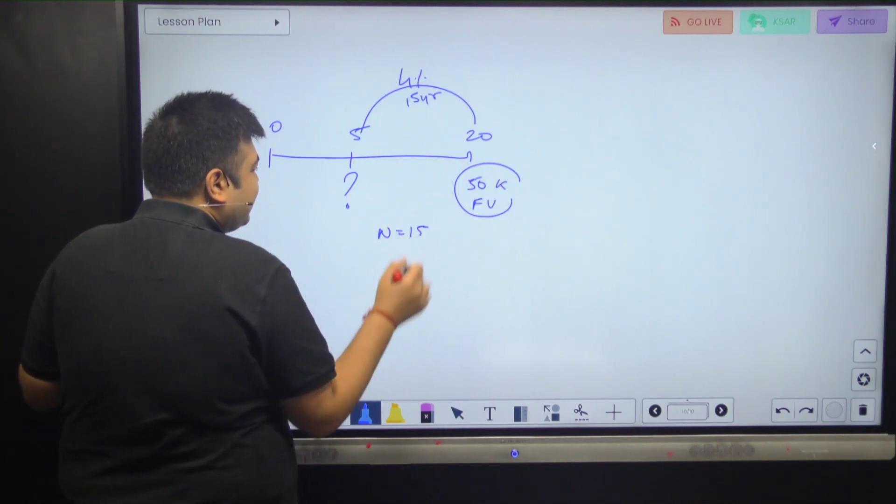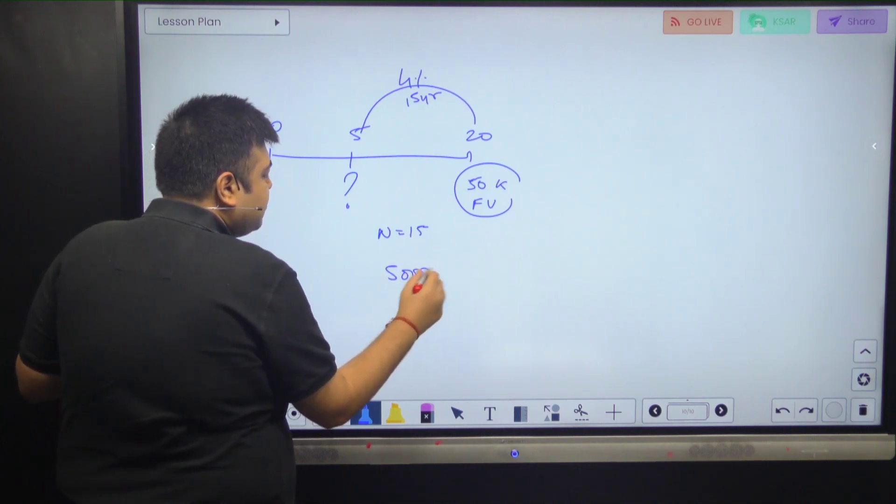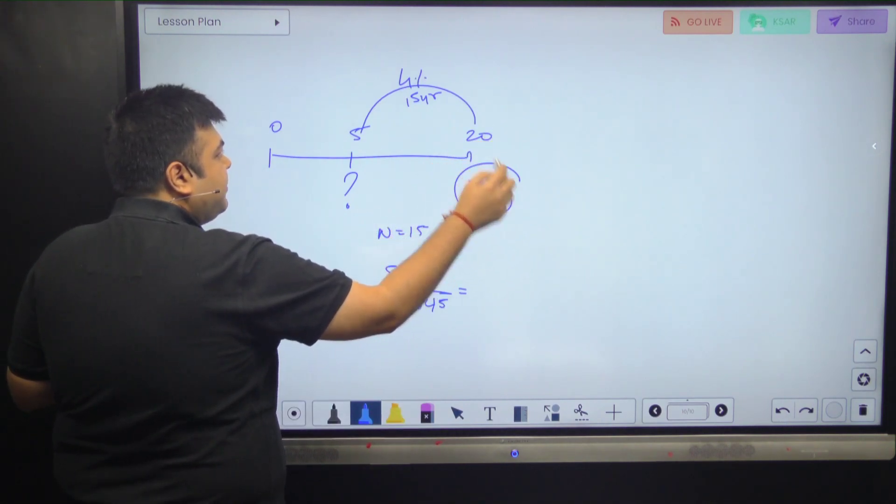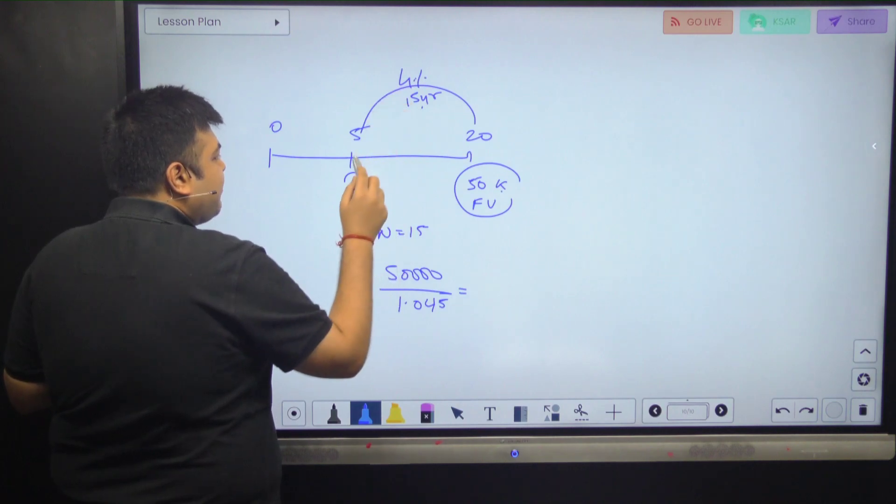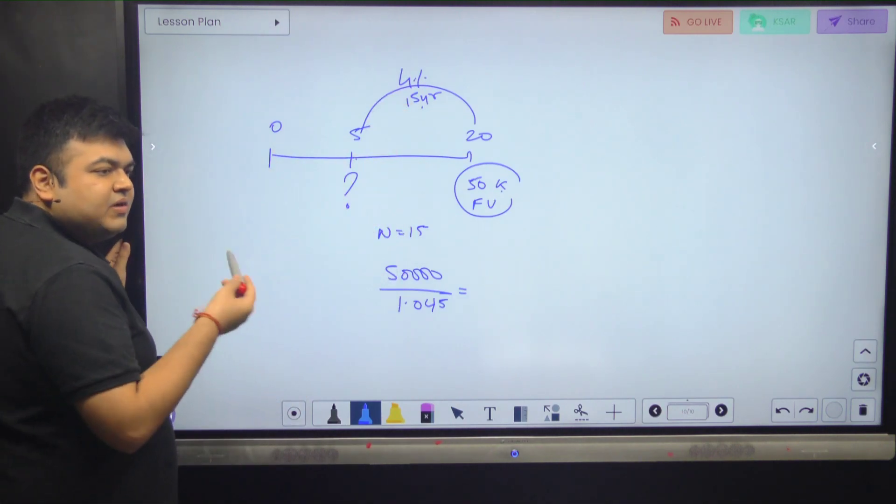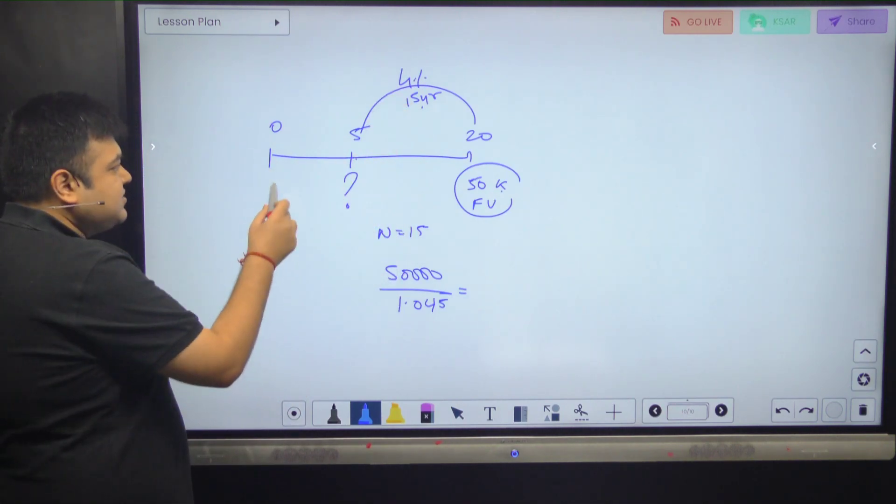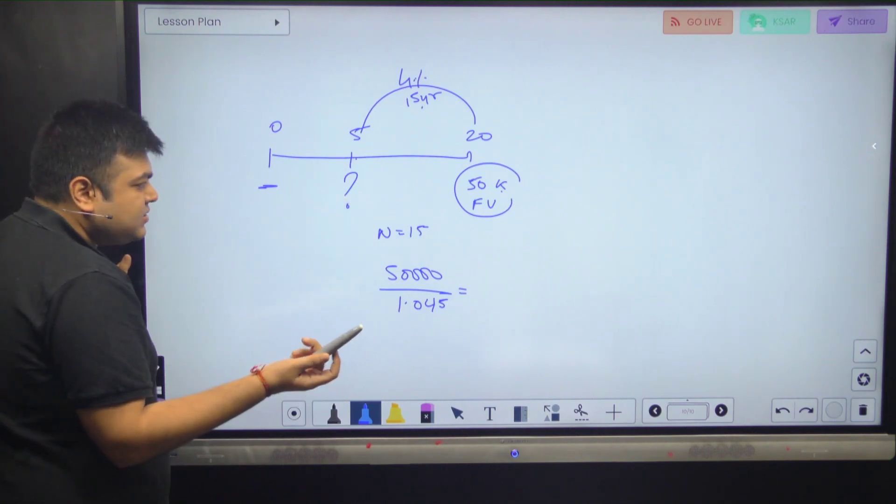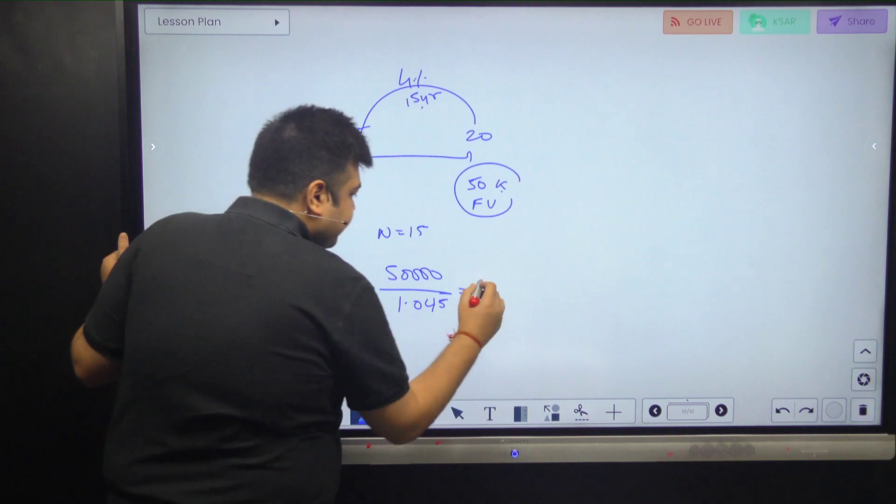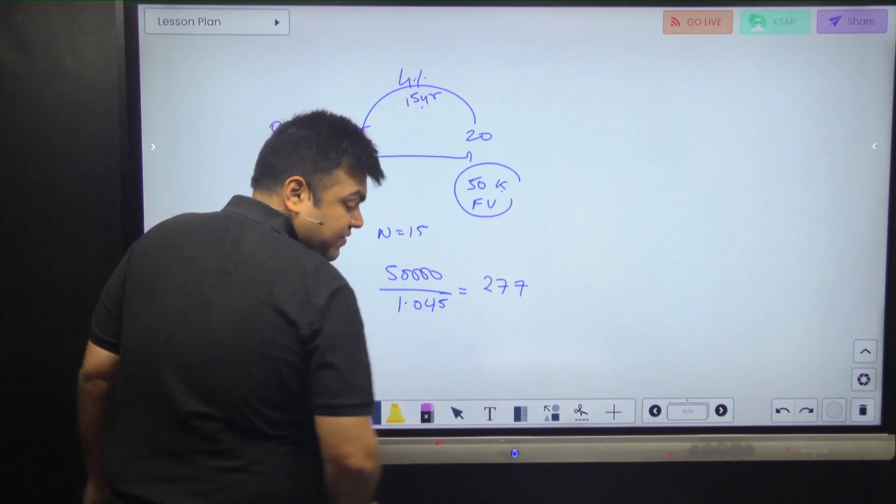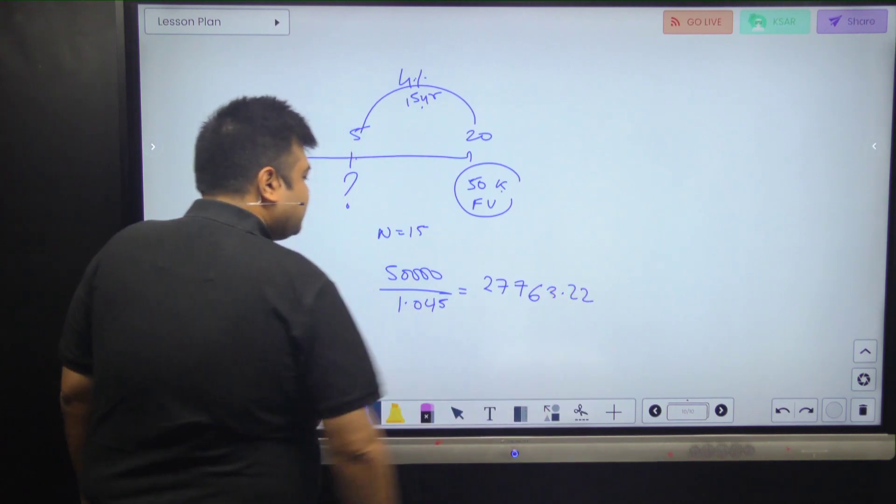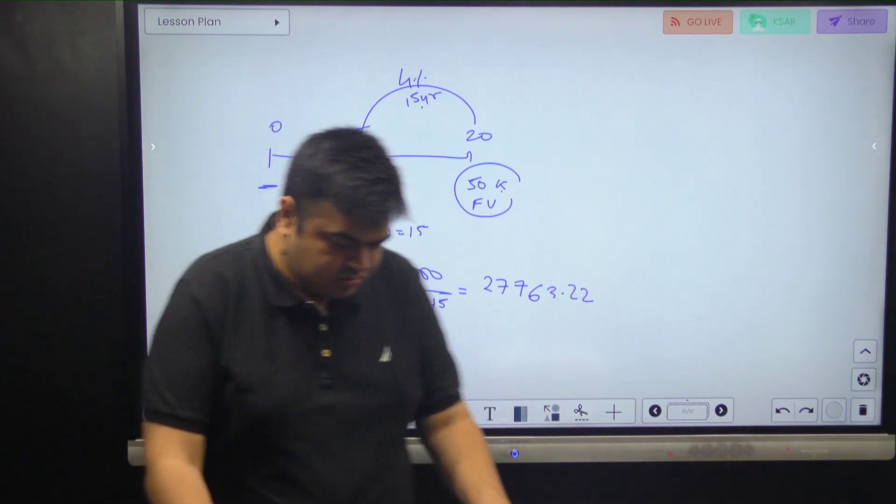All you need to do is calculate PV at time 5 years. This is a 15-year time horizon. So n equals 15. FV, I don't like this FV and all. $50,000 divided by 1.04 to the power 15 equals that's the answer. Or $50,000 is your FV, 15 is your n, 4 is your I/Y, compute PV. The PV is at time 5. It doesn't matter today or something because your PV needs to be calculated at time 5.